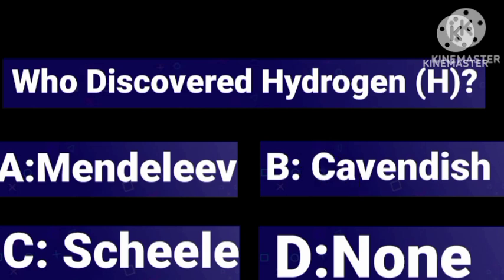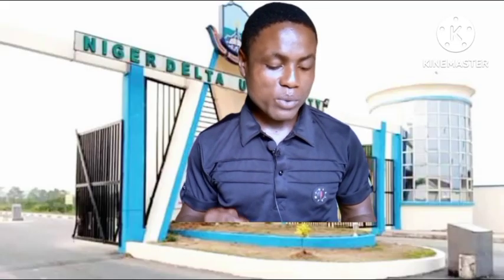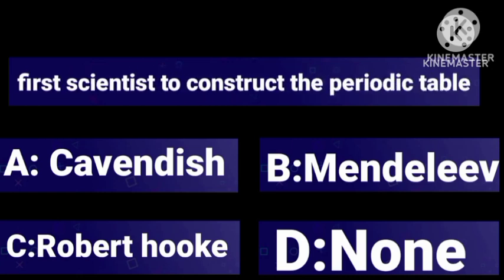Let's move to number two. Question number two: who was the first scientist to construct the periodic table? A) Cavendish, B) Mendeleev, C) Robert Hooke, D) None of the above. The right answer is not A.